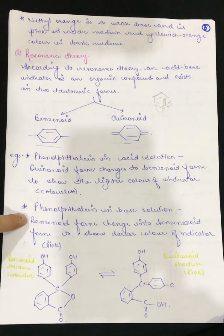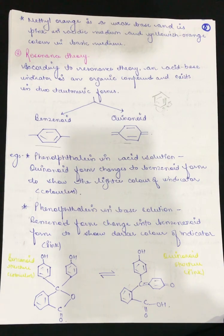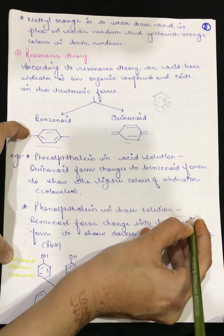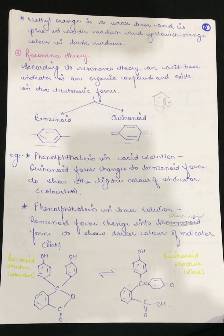For phenolphthalein in acid solution, the quinoid form changes to the benzenoid form, showing a lighter color — essentially colorless. But when phenolphthalein is added to a basic solution, the benzenoid form changes into the quinoid form, showing a darker color. So in basic solution, we obtain a pink color, and this pink color helps us reach the end point, which is our requirement in titration.